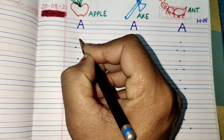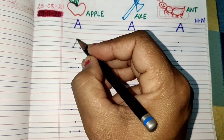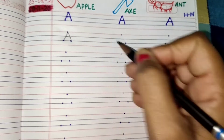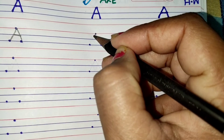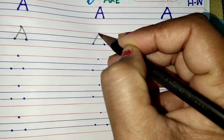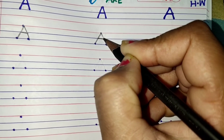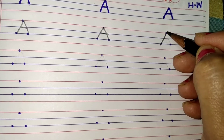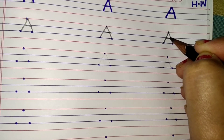Okay, now let's see the dots and write alphabet A. Start from the top — left side slanting line, now right side slanting line, and a sleeping line in the middle. Alphabet A. Again: left side slanting, right side slanting, sleeping line in the middle.